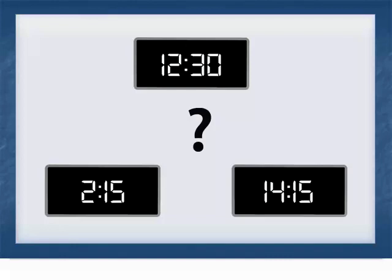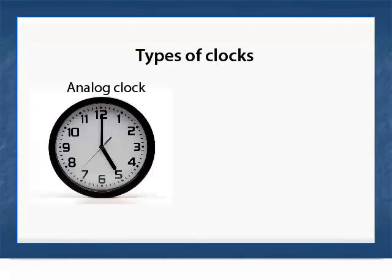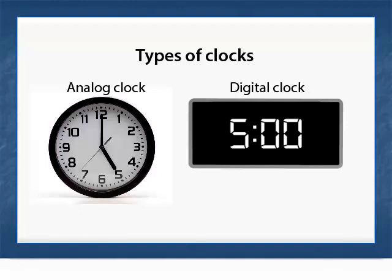Do you know how to tell time using a clock? There are two types of clocks: an analog clock with hands, and a digital clock with numbers only.